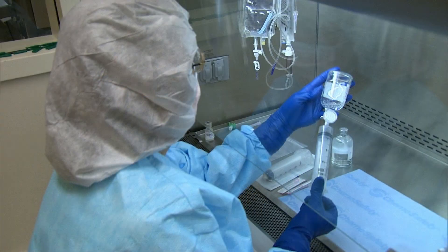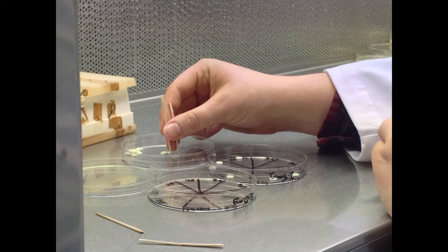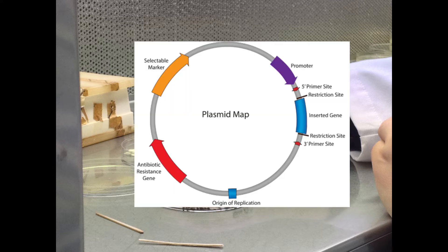In more practical terms, gain of function research is used to create antibiotic resistant bacteria. This is often done in conjunction with other modifications. By only acquiring antibiotic resistance if the bacterium gets the intended gene that's being modified, we ensure that they can then be selected for. This gives you the opportunity to apply an antibiotic that will kill any bacterium that has not been modified, and you can then use the isolated strain of modified bacteria.